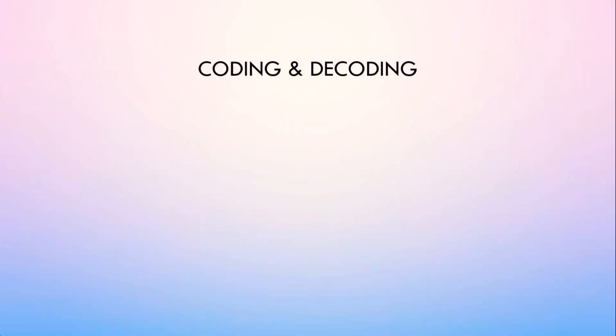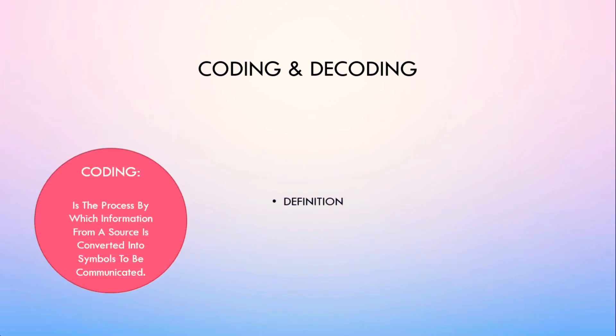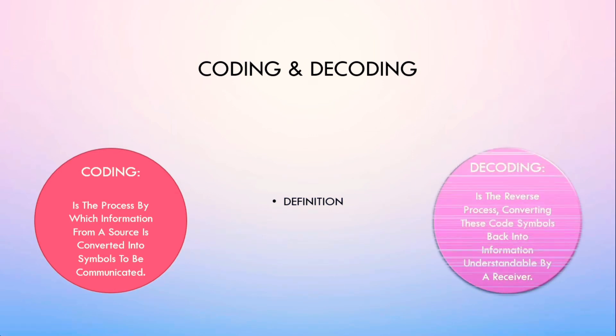Coding and Decoding. Definition: Coding is the process by which information from a source is converted into symbols to be communicated. Decoding is the reverse process, converting these code symbols back into information understandable by a receiver.